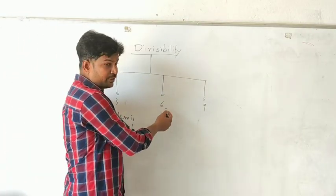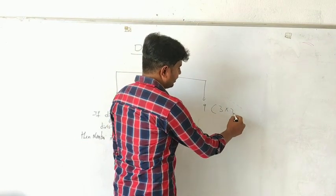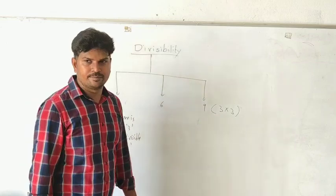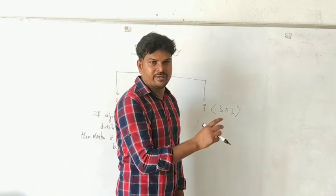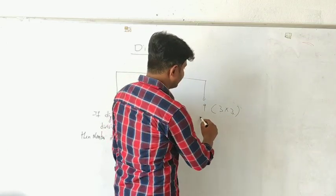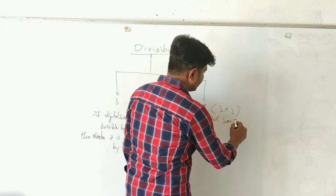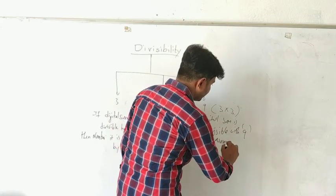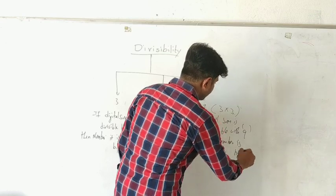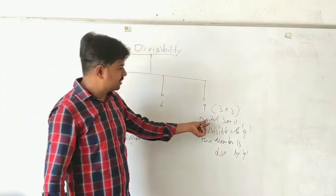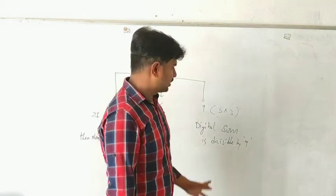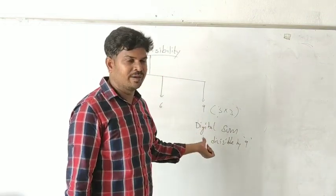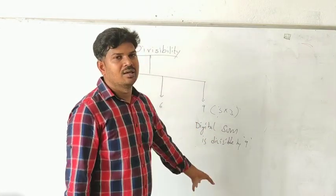Before going to 6, let's jump to 9. 9 can be written as 3 into 3. So it is combination of 3s and whatever digital rule we are following here, digital sum rule, applies for 9. But here we have 2 threes, so we require 2 numbers? No. It is the same rule, digital sum. But one thing is, if digital sum is divisible with 9, then number is divisible by 9. Here, digital sum has to be divisible by 3. Here, digital sum has to be divisible by 9. If you are ignoring 9 here, then digital sum becomes 0. Whenever you are ignoring, you will get answer 0. Whenever you are not ignoring, if it is divisible by 9, then this gets divisible by 9.